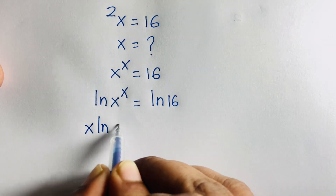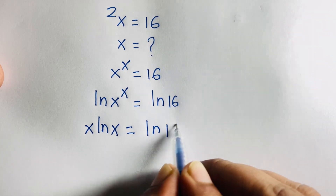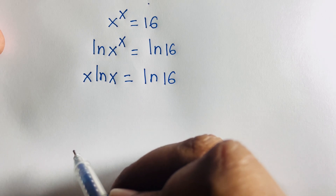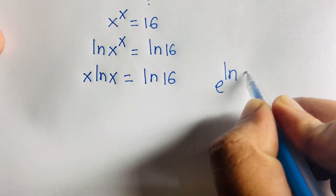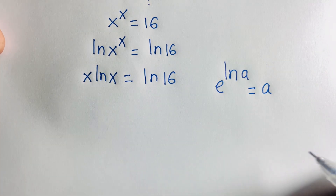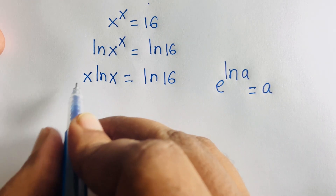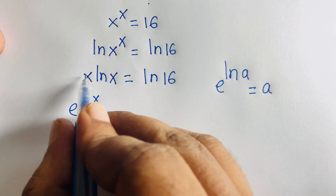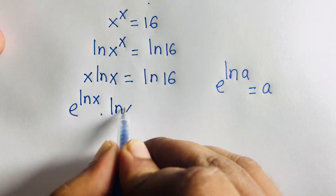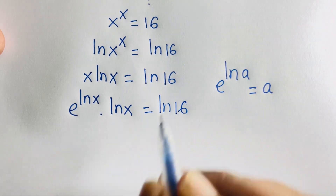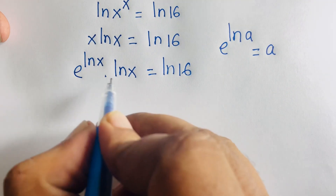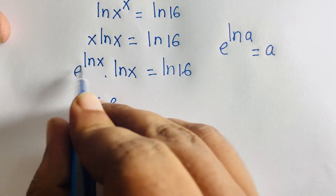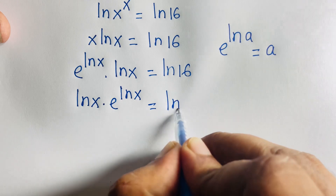Now, we know that e^(ln(a)) = a. So we can write x as e^(ln(x)). Substituting, the equation becomes ln(x) · e^(ln(x)) = ln(16).